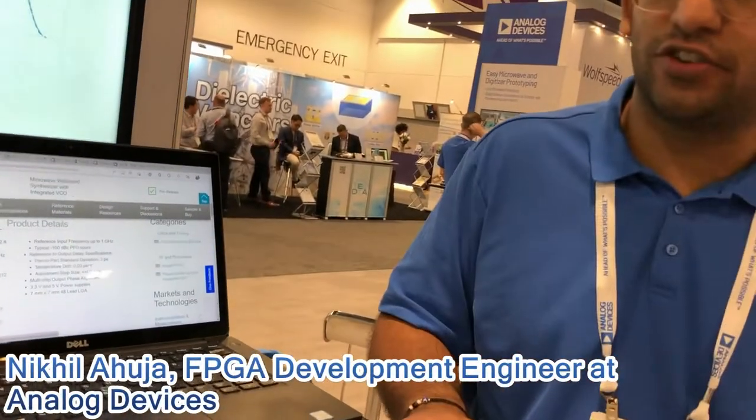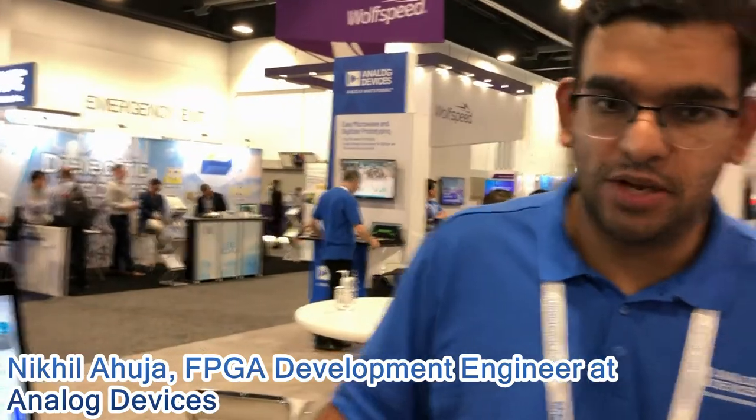So Nikhil, please go ahead. Here what we're using the 4377 for is to be able to interleave two of our 10 gigasample per second data converters, the AD9213, and the 4377 is instrumental in enabling us to actually do that.